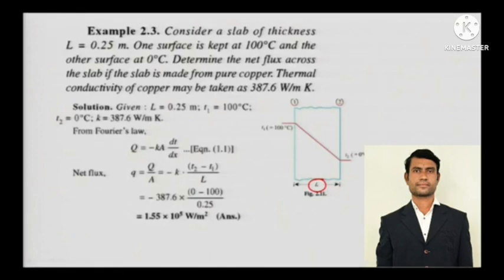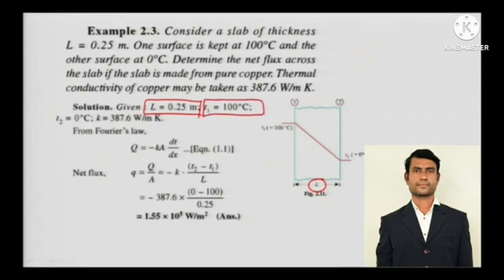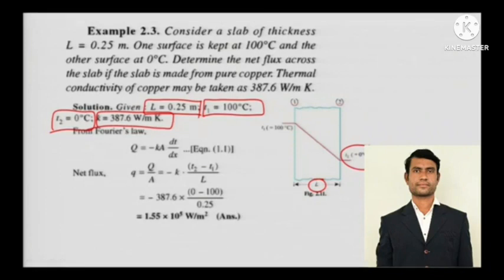So everything is given once again. The thickness L equals 0.25 meters. T1 is 100 degree Celsius, T2 is 0 degree Celsius. The thermal conductivity k is 387.6 watts per meter kelvin. Applying the simple Fourier's law: Q equals minus k A dt by dx.